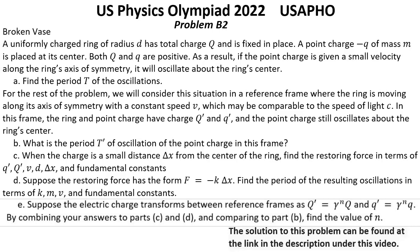For the rest of the problem, we will consider this situation in a reference frame where the ring is moving along its axis of symmetry with a constant speed V, which may be comparable to the speed of light C.